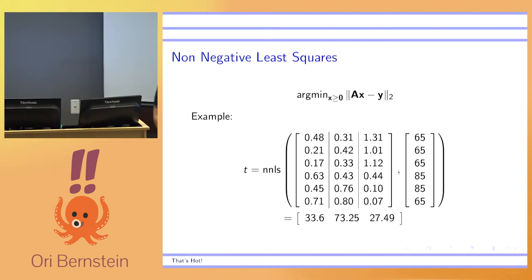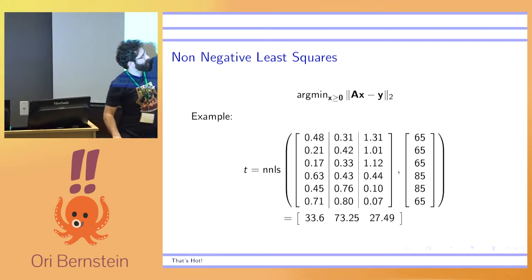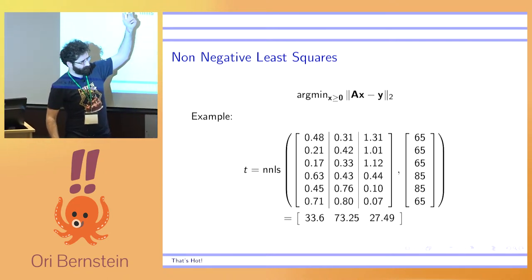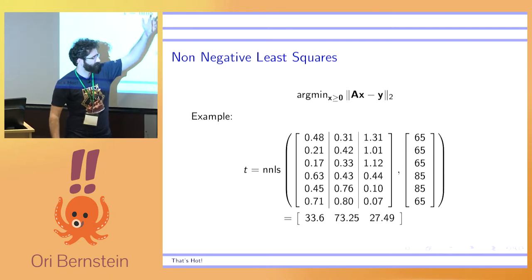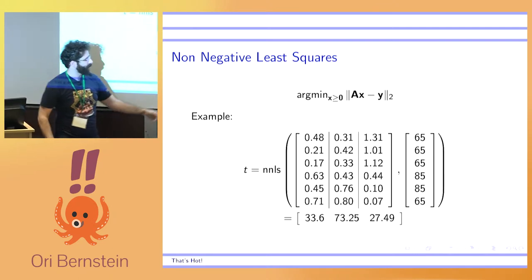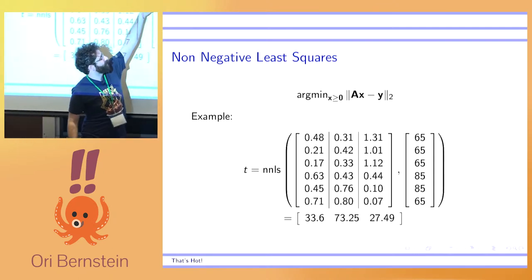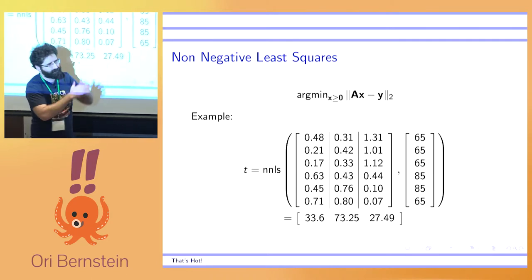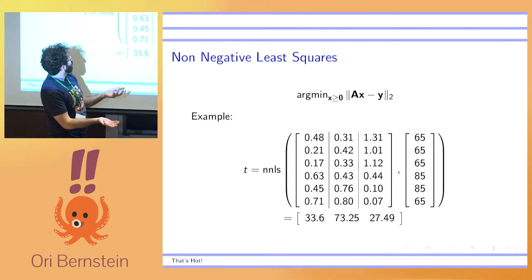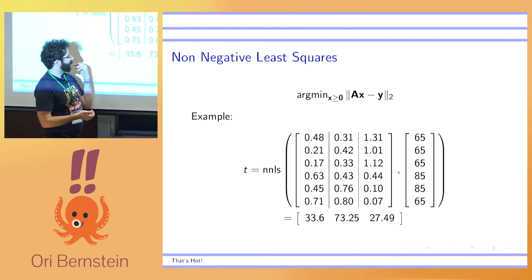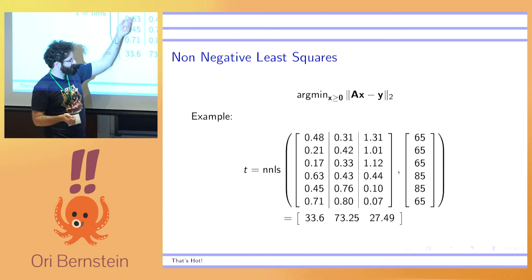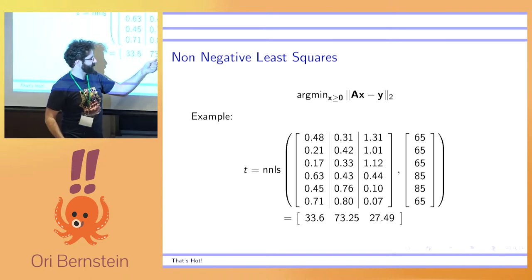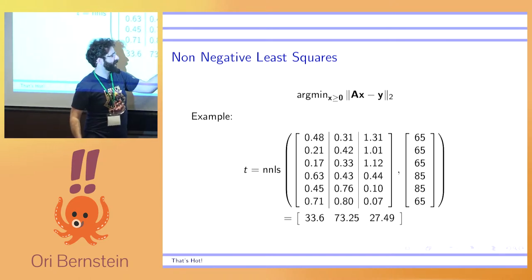So here's an example with the previous values. The first column is the first vector from above. The second column is the second vector. The third column is the third vector. And we want to get the temperature up to 65, 65, 65 in the first three squares, 85 in the other two squares, 65 in the third square. So we toss it into the non-negative least squares solver and it says spend 30 seconds in this configuration, 75 seconds in this configuration and 27 and a half in this configuration.